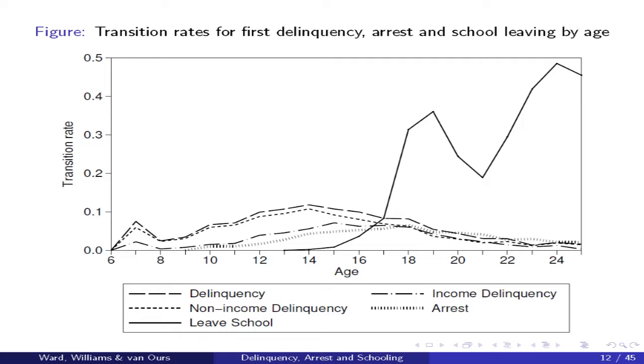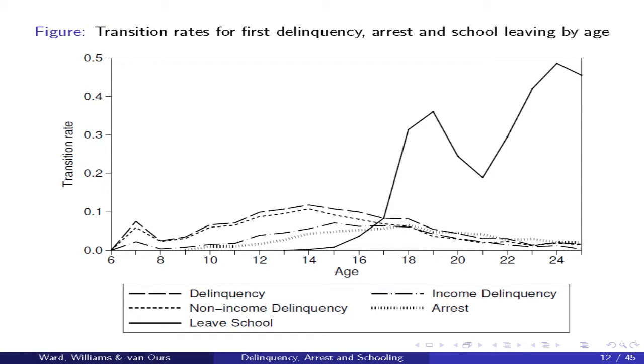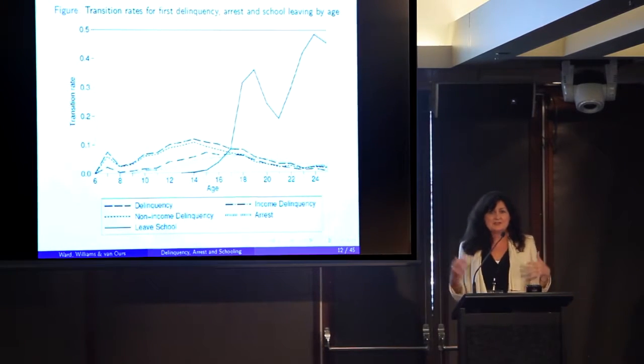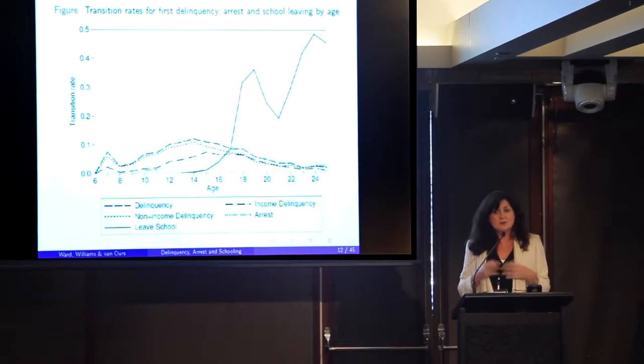That ordering is really important. There's a literature saying early school leaving leads to adult incarceration — yes, but that horse has already bolted, because what precedes the early school leaving is their engagement in delinquency. Once they've been arrested as an adult, they've already committed to a path. A discussion about the effect of education on incarceration seems to be missing the bigger picture — we need to step back and look at what happens before school leaving.